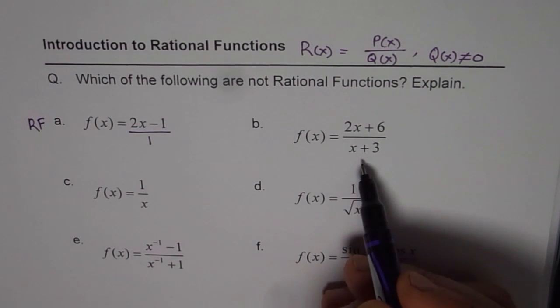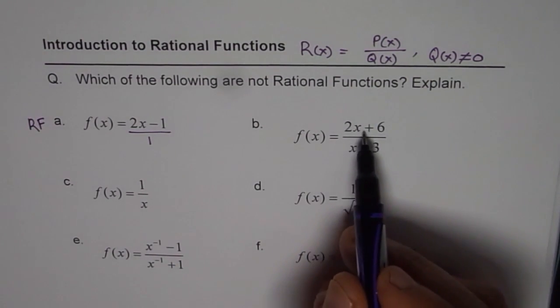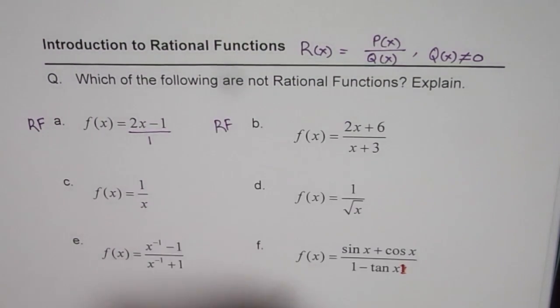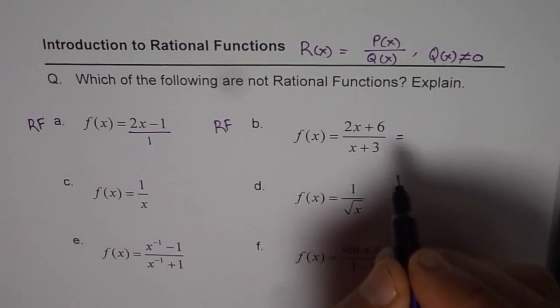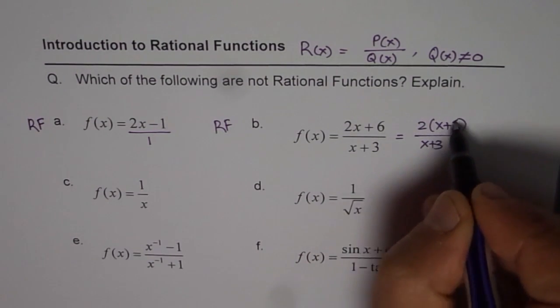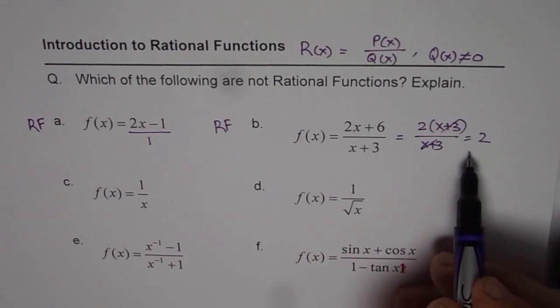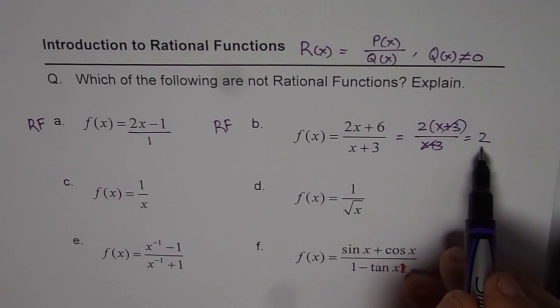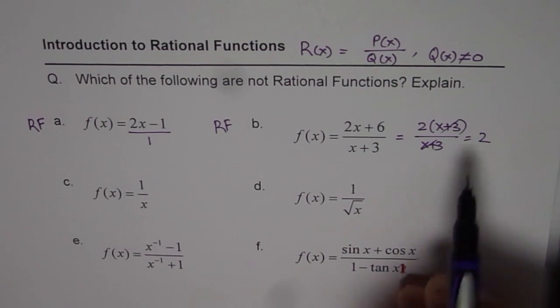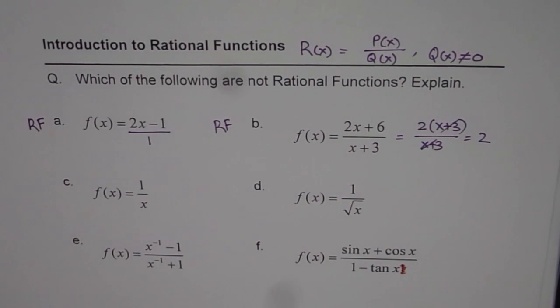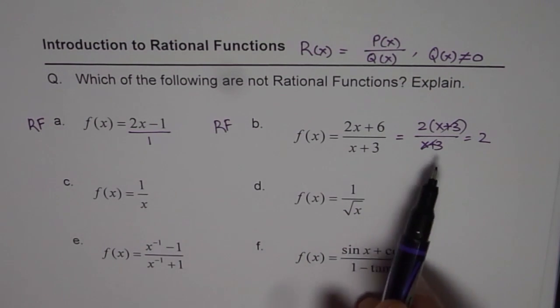The second one clearly is a rational function. We have a polynomial 2x plus 6 in the numerator. Denominator is x plus 3. So we will write rational function. Well, at times I have seen students doing like this. They will take 2 common, write (x + 3) divided by (x + 3), cancel this off, equals to 2. And they will say it is not a rational function, just a constant 2. Remember one thing, constant is also a rational function. Don't think that constants are not rational functions. They are also rational functions. So when you simplify your rational function, you always get a rational function. So this is indeed a rational function.